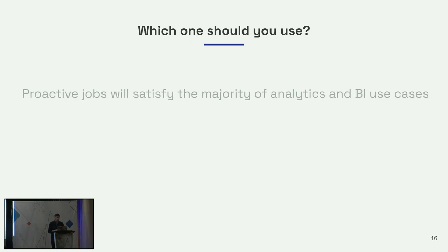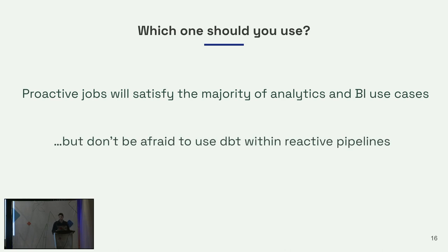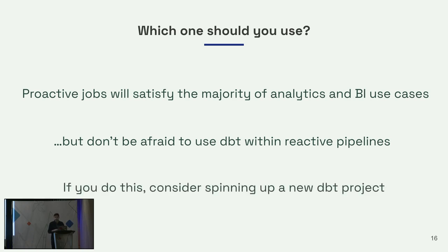So which one should you use? My personal opinion is that proactive, scheduled jobs will really satisfy the vast majority of your analytics and BI use cases. If you want to go more complex, more real time, more reactive, think deeply about whether you really need to. But don't be afraid to use DBT within reactive pipelines, because it can be really powerful. DBT is a great tool to manage any chain of transformations within your database or data warehouse because it comes with great features like lineage, testing, and pretty good governance. If you are going to do this, I would consider spinning up an entirely new project — keeping your traditional analytics and BI DBT code separate from things you want to do reactively in other pipelines.